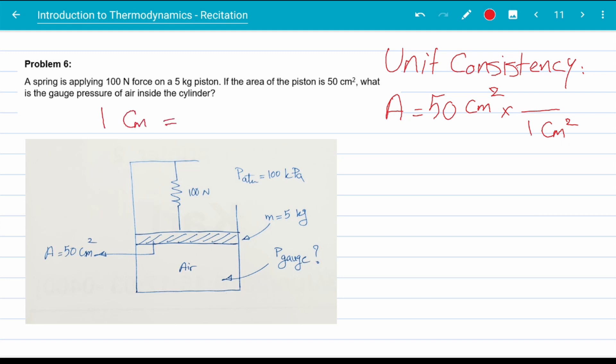1 centimeter is 0.01 meters. So 1 centimeter squared is 0.0001 meters squared. Now we can multiply 50 centimeters squared by 0.0001 meters squared over 1 centimeter squared. Now because those two numbers are actually the same, it is just like multiplying 50 by 1 over 1. Centimeters squared will cancel each other. We are left with a is equal to 0.005 meters squared.